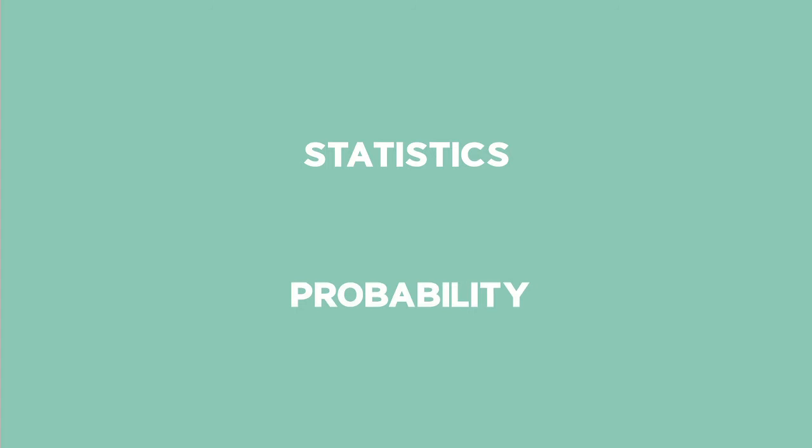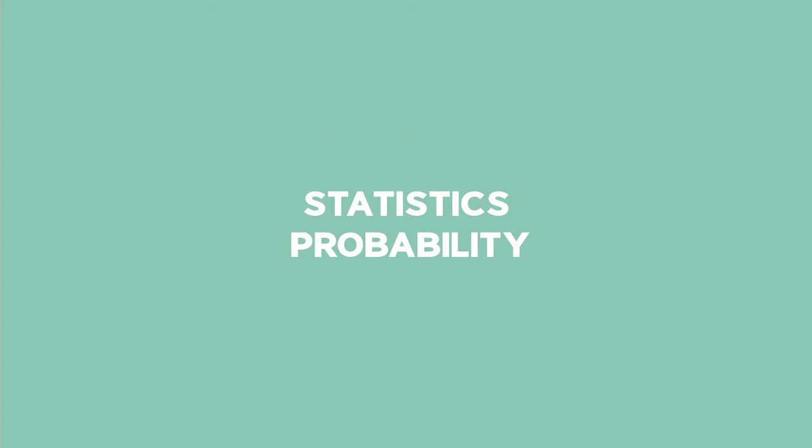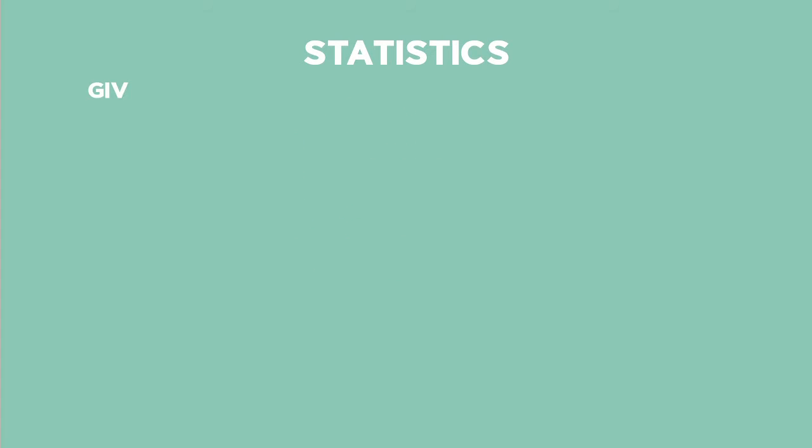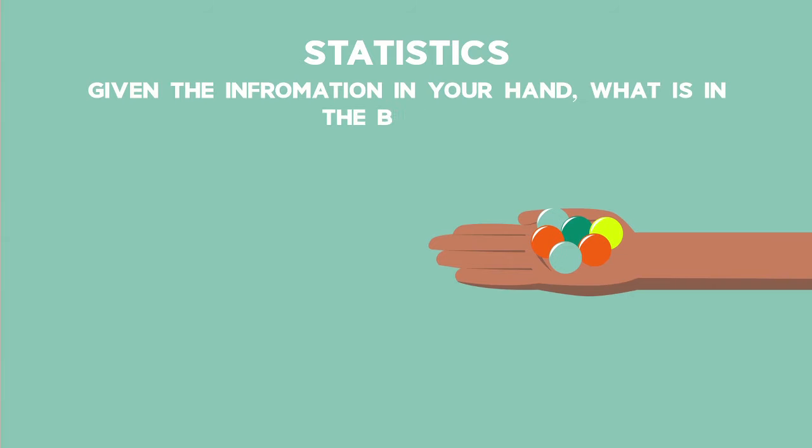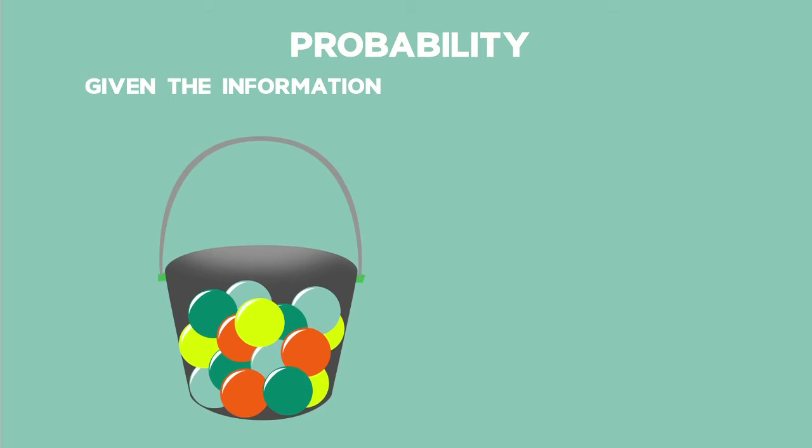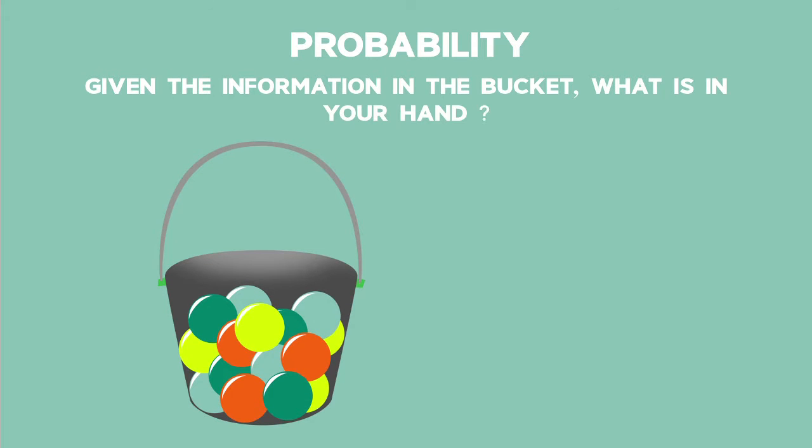Statistics and probability are two closely related topics. With statistics, you start with observed data and then make conclusions on how something works. In probability, you start with an assumption about how something works and then decide what type of data you're likely to see.